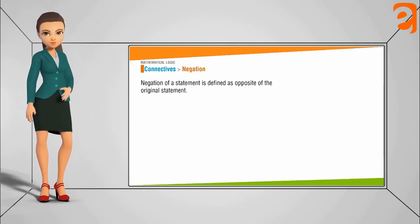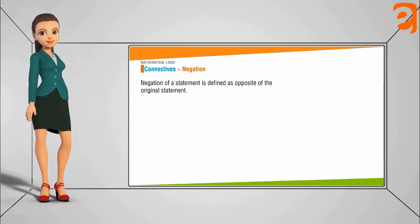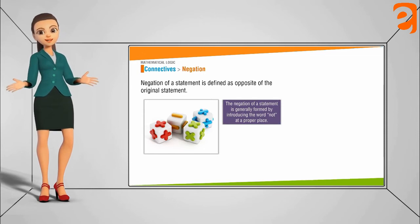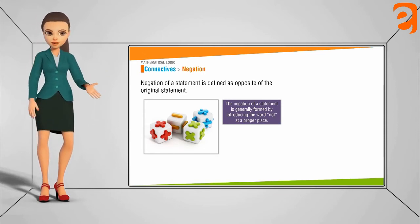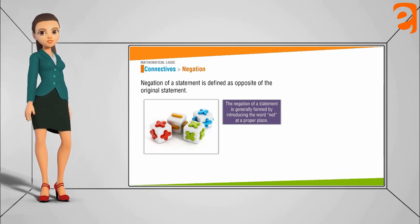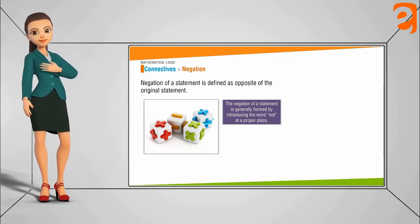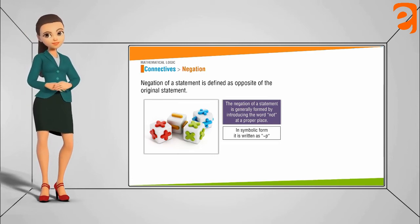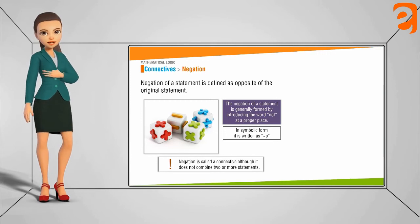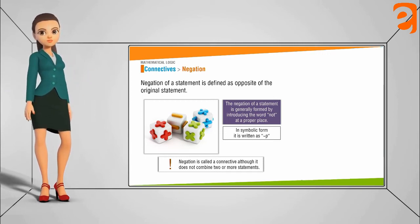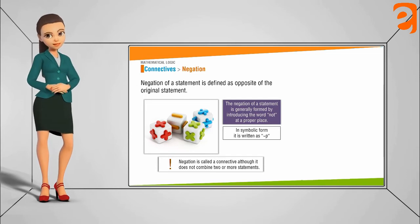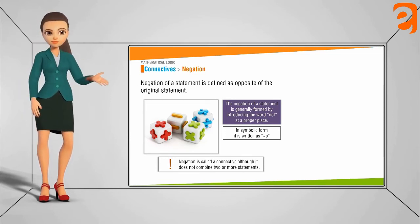What do you mean by negation? The negation of a statement is defined as the opposite of the original statement. It is generally introduced at the start of the sentence by placing words like 'not', 'it is not the case', or 'it is false', so that the statement takes on the opposite meaning of the original. In symbolic form it is represented by tilde p (~p). Note that negation is not technically a connective — it does not combine two or more statements — although we include negation in our discussion of connectives.